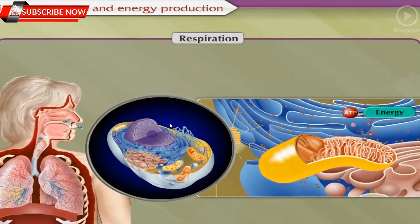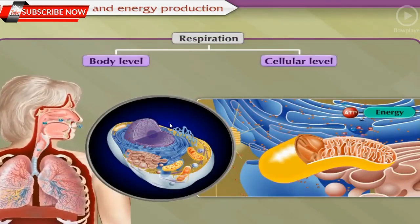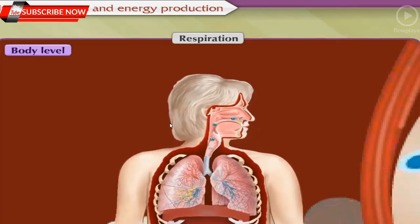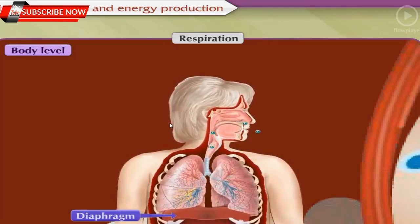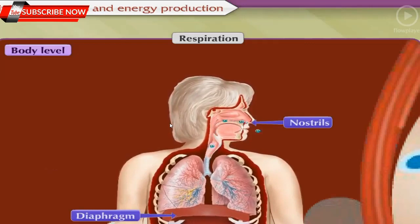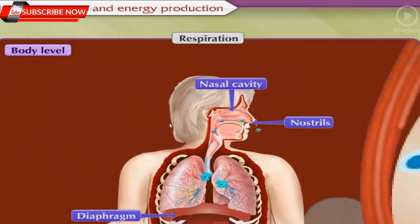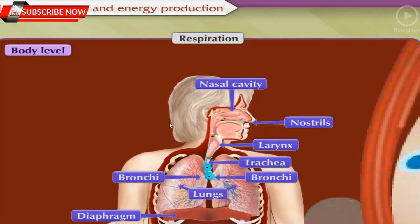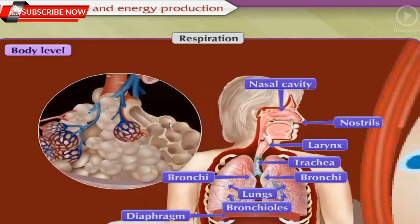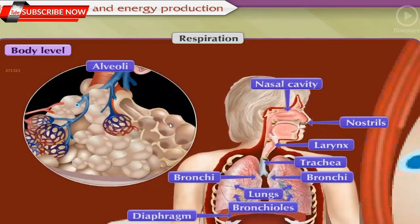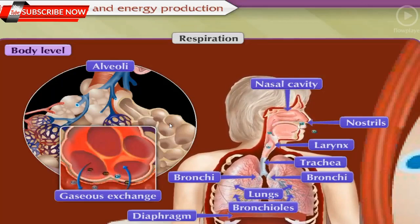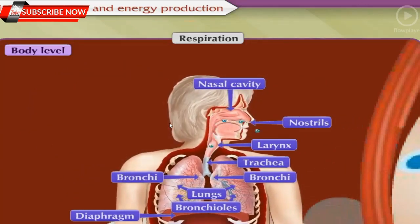In living organisms, respiration occurs at two levels: body level and cellular level. At body level, oxygen and carbon dioxide are exchanged between the body and surroundings. When the diaphragm contracts and moves downwards, air is taken into the body through the nostrils, enters the nasal cavity, then through the larynx moves into the trachea, and further passes into the two bronchi in each lung, then into the bronchioles. Alveoli are present at the end of the bronchioles. Oxygen present in the air is taken up by blood in the alveolar blood vessels, and carbon dioxide is released in the alveoli and expelled when we exhale.